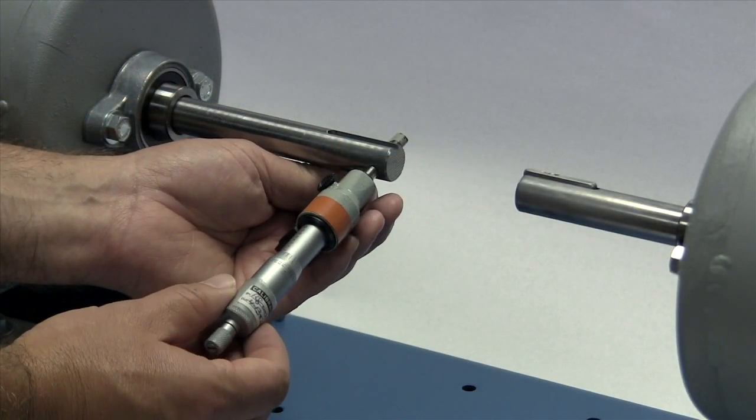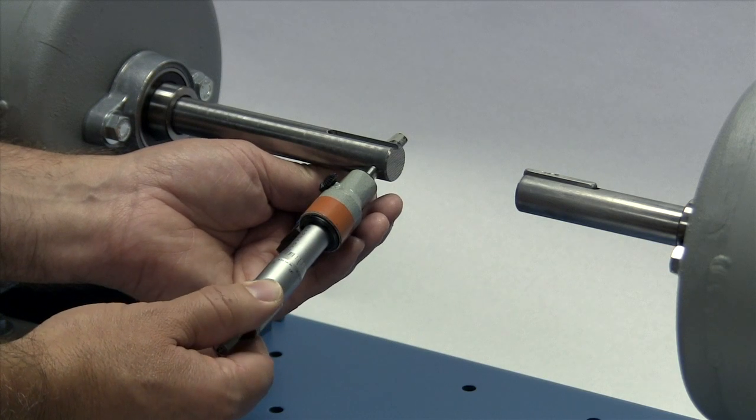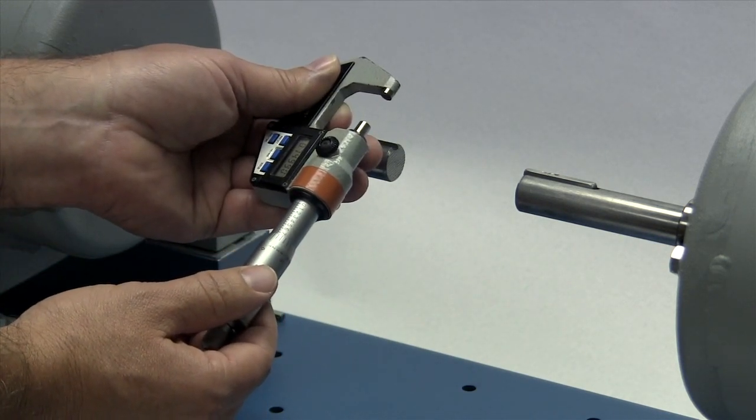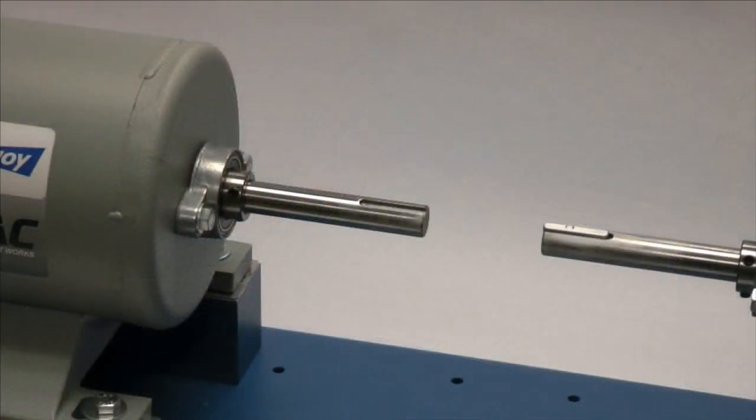If not done already, you should measure the shaft and ensure that the shaft diameter matches the coupling bore size. Then inspect the shaft and clean off any nicks or burrs from the keyway or shaft diameter.